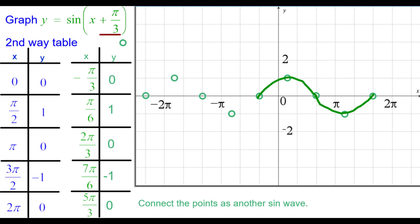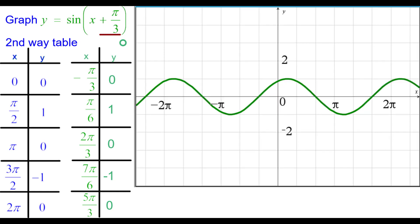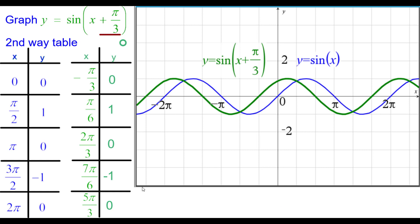And we'll connect the points as another sine wave. Frown. Smile. And we can compare that to the sine parent function in blue. Again, we say there's a phase shift left pi over 3 from the parent function to get to the green function.